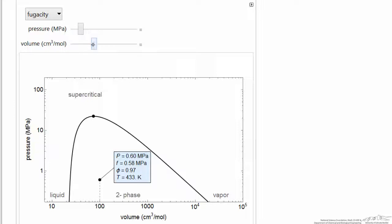If I change the volume, all I'm doing at constant pressure is changing the relative amounts of liquid and vapor. And since the liquid and vapor in equilibrium in this two-phase region have the same fugacity, we don't change the fugacity. And so I can move it within this region, no change.